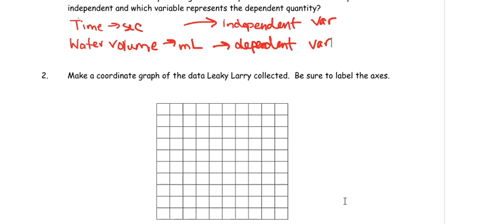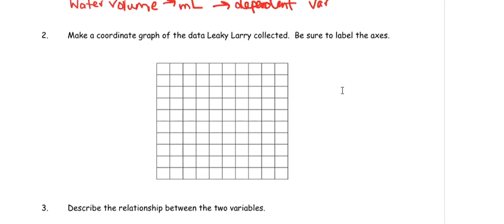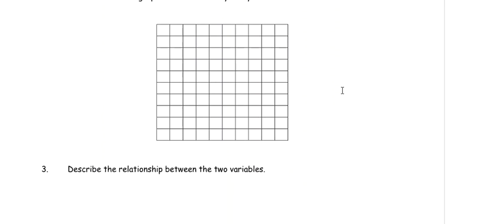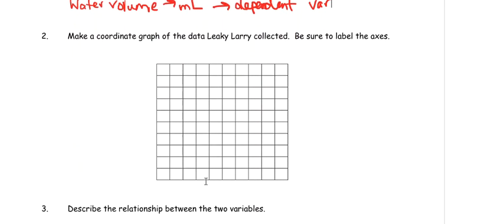Number two, make a coordinate graph of the data Leaky Larry collected. Be sure to label the axes. Remember, the x axis is always going to be your independent variable, and the y is going to be your dependent variable. You almost generally, for now, want to have zero be the beginning of your x and your y. It makes graphs a little bit neater. You're going to see graphs in the future when you have bigger numbers that don't start off at zero.